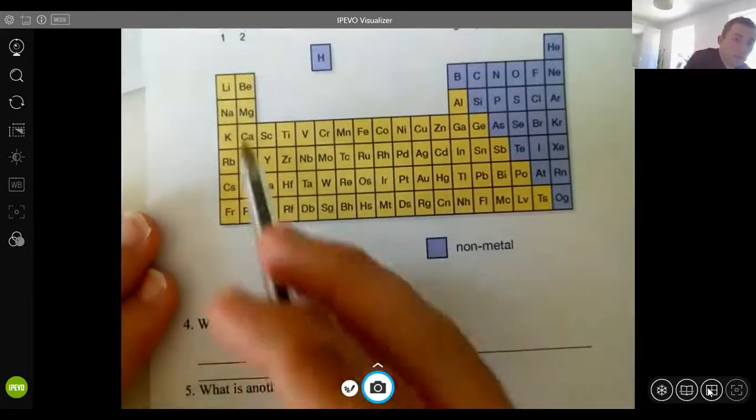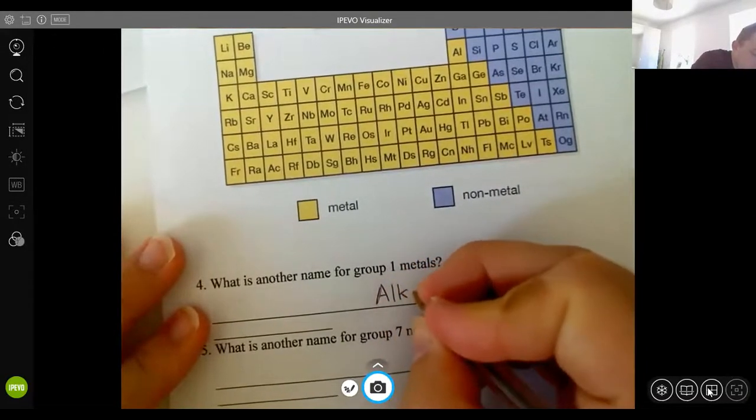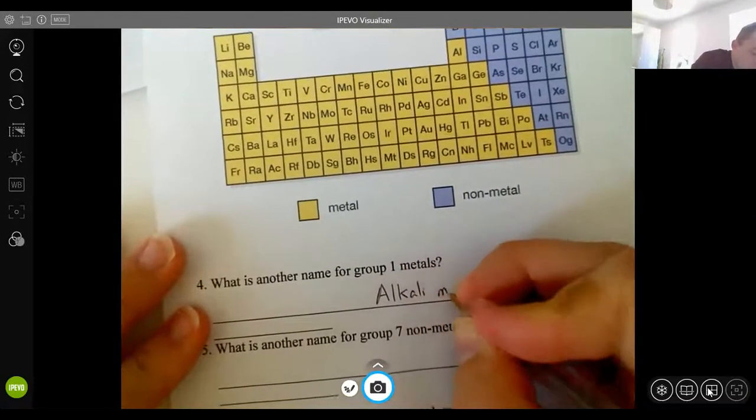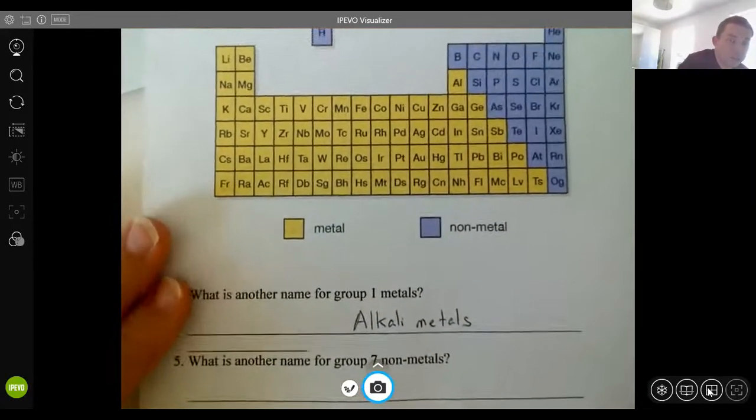So there's a couple of groups that are really important to know about. So group one metals, this group here, they are called the alkali metals. Now, next lesson, we'll do some more time on this, but they are really reactive. And when they're in water, they form an alkali.